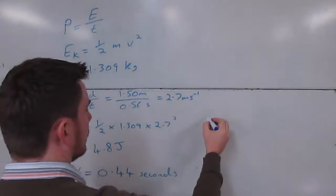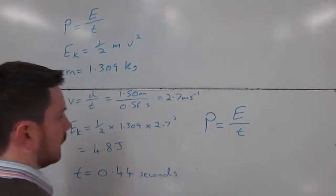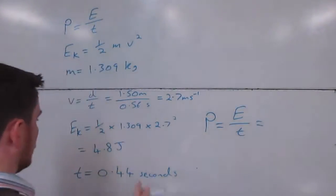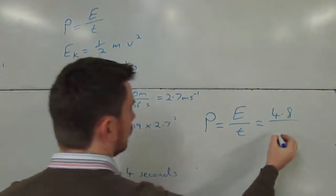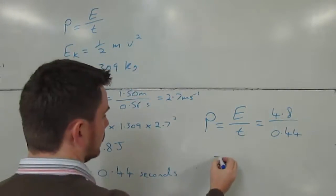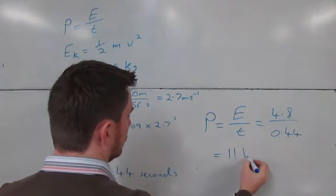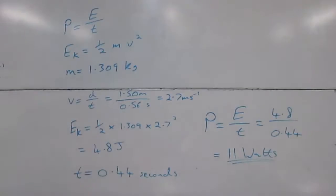Now we can use the formula again, power equals energy divided by time. We substitute in our values, so we had 4.8 joules divided by 0.44 seconds. That comes out to two significant figures as 11 watts. We could also write that as 11 joules per second.